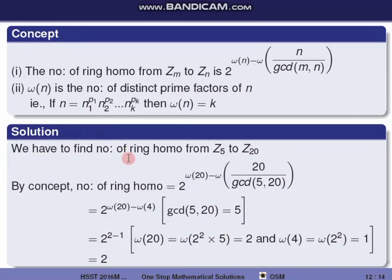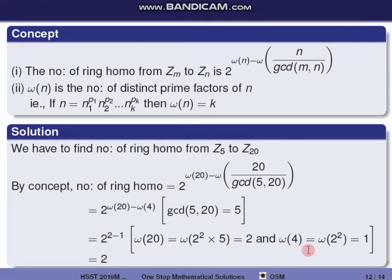The number of ring homomorphisms from Z5 to Z20: applying the concept, it equals 2^(ω(20) - ω(GCD(5,20))). Since 20 = 2² × 5, ω(20) = 2 (prime factors 2 and 5). GCD(5, 20) = 5, and 5 is prime so ω(5) = 1. Therefore 2^(2-1) = 2^1 = 2. The number of ring homomorphisms is 2.